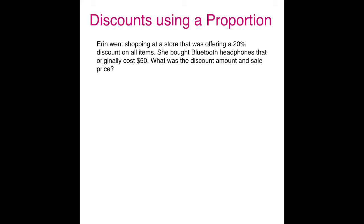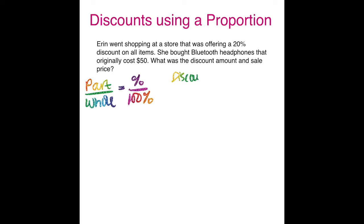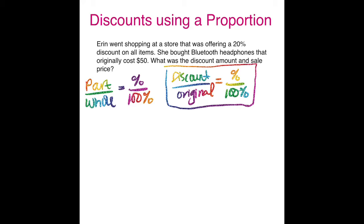If we're going to be using a proportion, we have to think back to the proportion we've been using, which looks like: part over whole equals percent over 100%. However, we're working with discounts, so the proportion I like to use here is: discount over original equals percent over 100%. My originals are like my wholes and my discounts are like my parts.